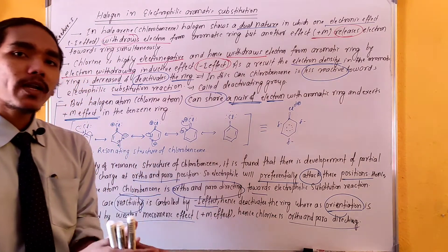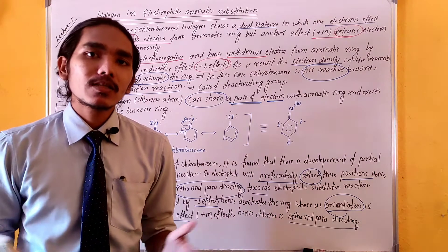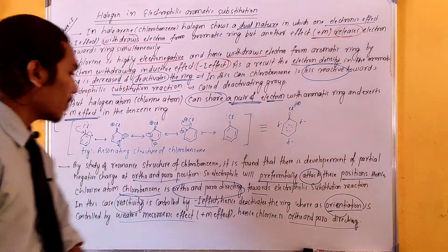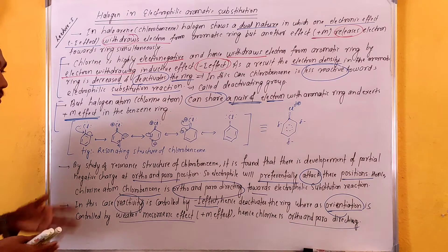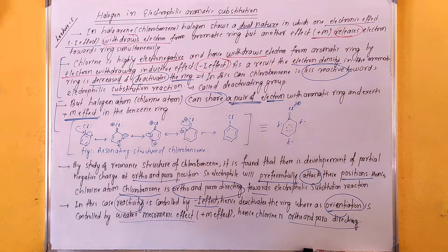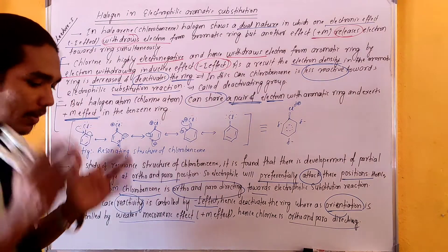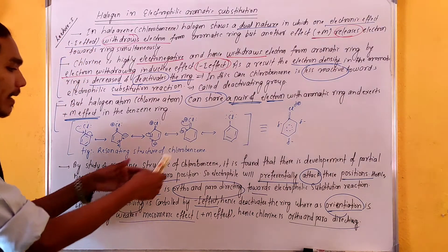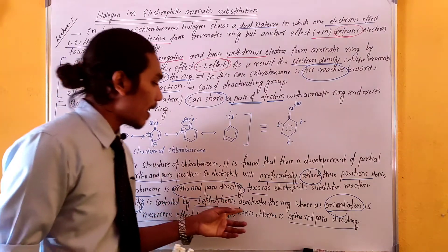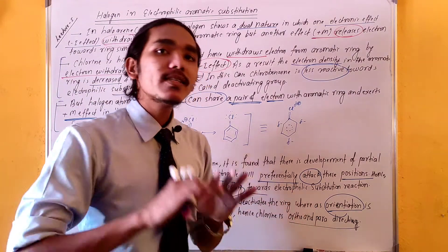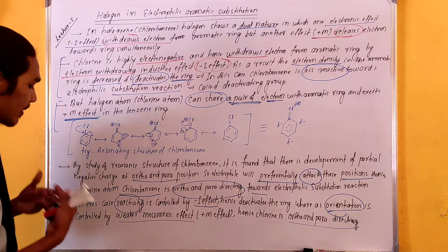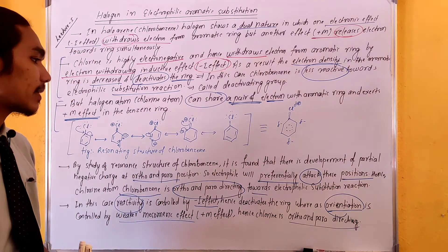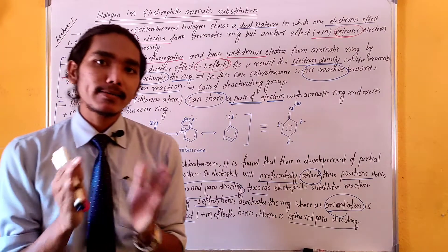Chlorine donates electrons to particular positions, so incoming electrophiles are directed to the ortho and para positions. Reactivity is controlled by the minus I effect, whereas the orientation is controlled by the weaker mesomeric effect. The mesomeric effect is a weak effect, giving chlorine its ortho-para directing nature.